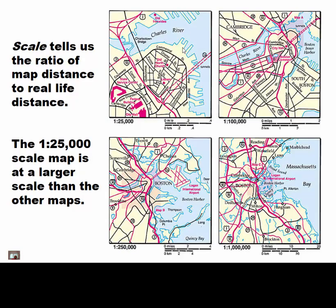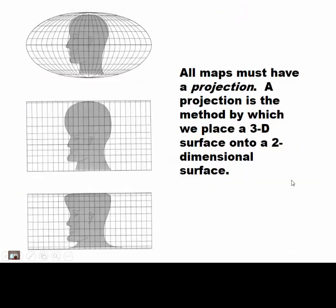We also have scale. When we look at maps, a scale of 1:25,000 is a larger-scale map than 1:1,000,000 — if we're talking about fractions. A larger-scale map shows more detail versus less detail.